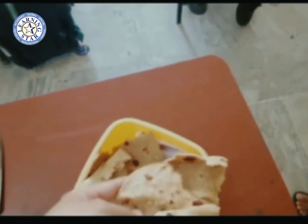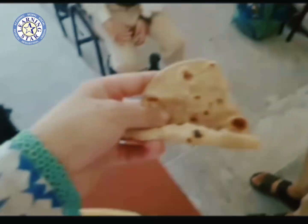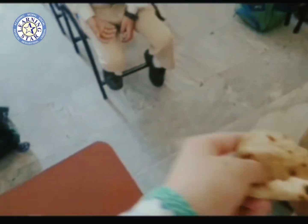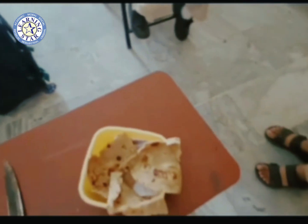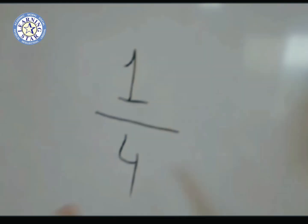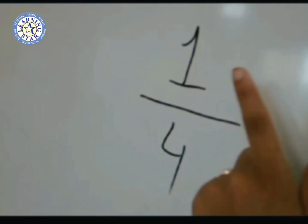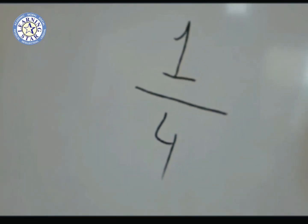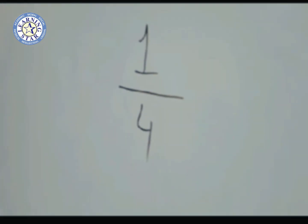I have given one part of this roti to Zuhieb. How many parts are left? Three parts are left, and this one part has been given away. Now, this one part is what I have given to Zuhieb, and these are the total parts.